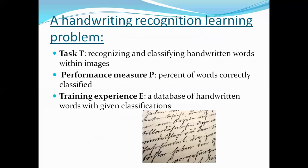Next is the handwriting recognition learning problem. As a relatable example: the first time you copy an assignment from a friend, the handwriting is difficult to understand. The second time, you can understand it better. By the third time, you can clearly recognize what has been written. This illustrates how recognition improves with experience.